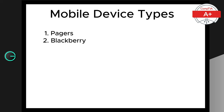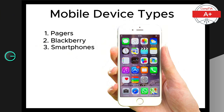Now let's talk about smartphones. These are the most common mobile devices today. They combine the functionality of a phone with the capabilities of a computer. You can make calls, send texts, browse the internet, and run a variety of apps. Popular operating systems include iOS, Android, and Windows, each offering unique features and user experiences.